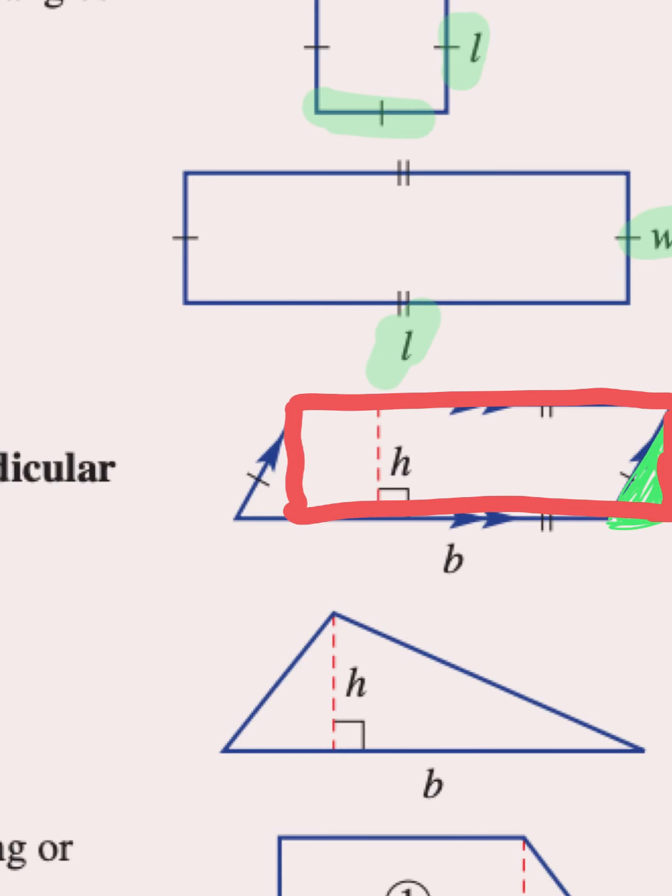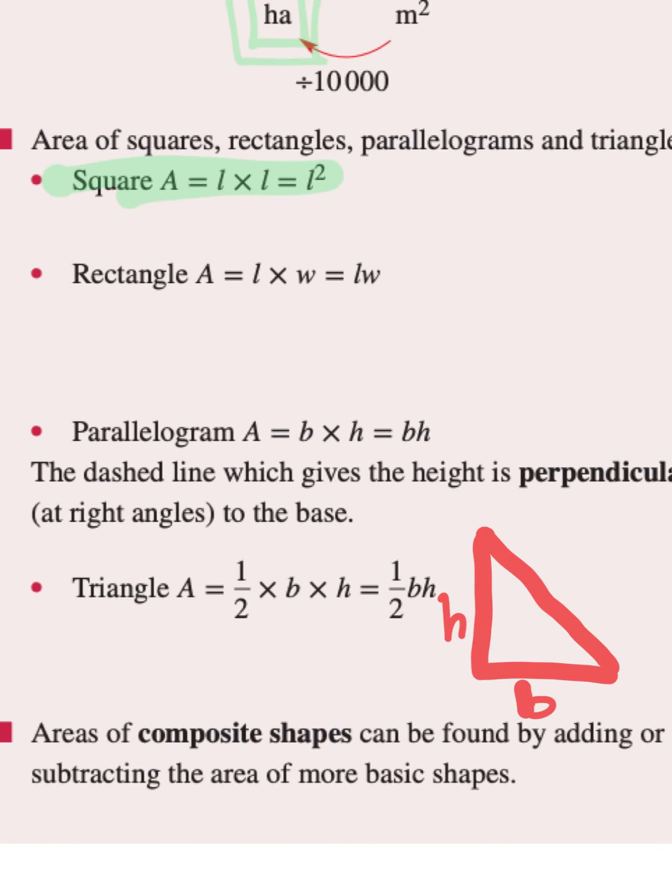So that's why the formula for a parallelogram is height times base. My favorite, so cool. Triangles are also pretty cool, like maybe second best after parallelograms, because their formula is half base times height. Now remember, base times height or length times width is the area of a rectangle, but triangles are half the area of a rectangle. That's why we're halving base times height.